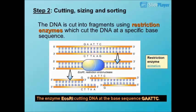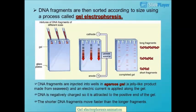Step 2 — Cutting, Sizing and Sorting: The DNA is cut into fragments using restriction enzymes, which cut the DNA at a specific base sequence. For example, the enzyme EcoRI cuts DNA at the base sequence CAC.